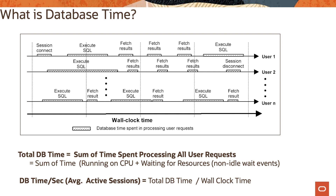Let's take an example to understand what database time is. There are several user sessions connected to Oracle database performing various activities. The database spends time on various requests — these could be session connect, executing SQL, or fetching results. There are also session disconnect activities going on. At any point in time there could be one or more sessions. The black line shows total wall clock time, and the database time is represented in the dotted areas showing time spent processing user requests.